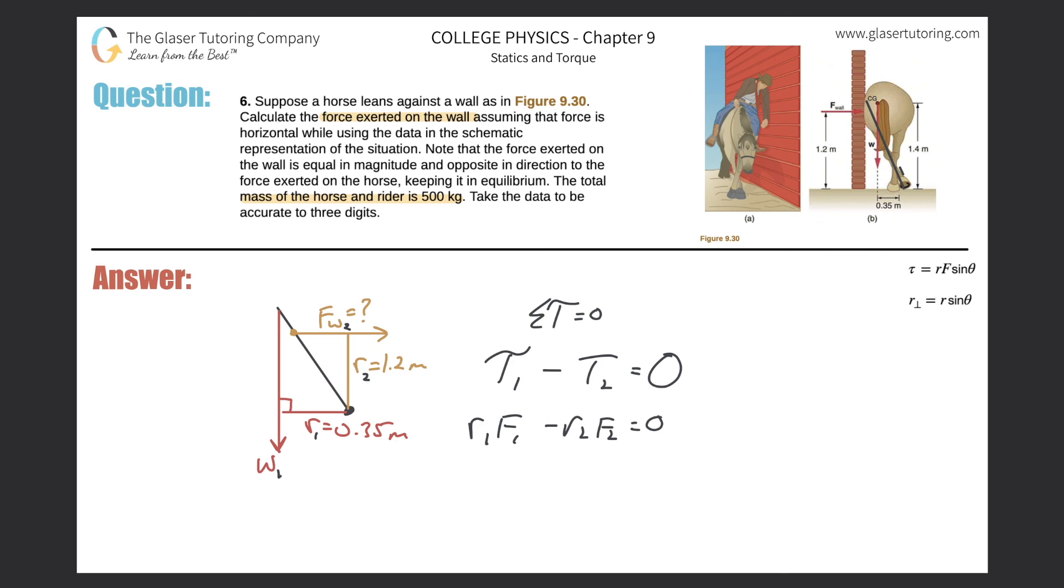So now we're looking to solve for F2. So add this on over to the right hand side. So it's R1F1 is equal to R2F2, and then divide out R2 from both sides. So it's F2 divided by R2, and then we are good to go. So here is our formula. Now all we need to do is just plug in the values.